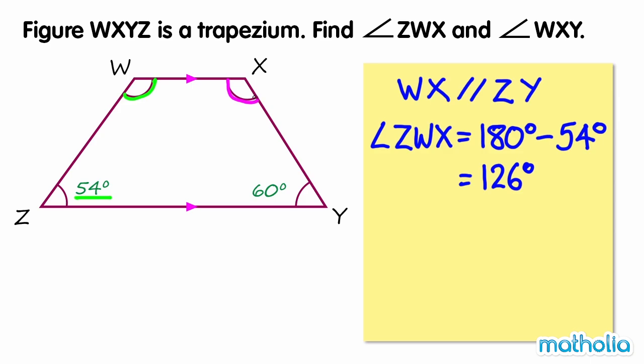Similarly, angle WXY can be found by subtracting 60 degrees from 180 degrees. 180 degrees minus 60 degrees equals 120 degrees, so angle WXY equals 120 degrees.